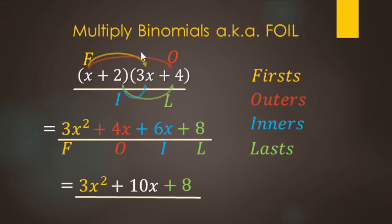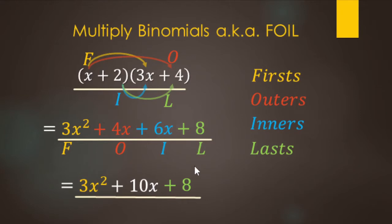So x times 3x — that's the First, because it's the first term in each parenthesis. The Outers are the outside two terms. The Inners are the inside two terms — that's where we start multiplying by the 2. And the Last is the term right before the end of each parenthesis, so the 2 and the 4 are the lasts. We do all those multiplications and then add like terms.